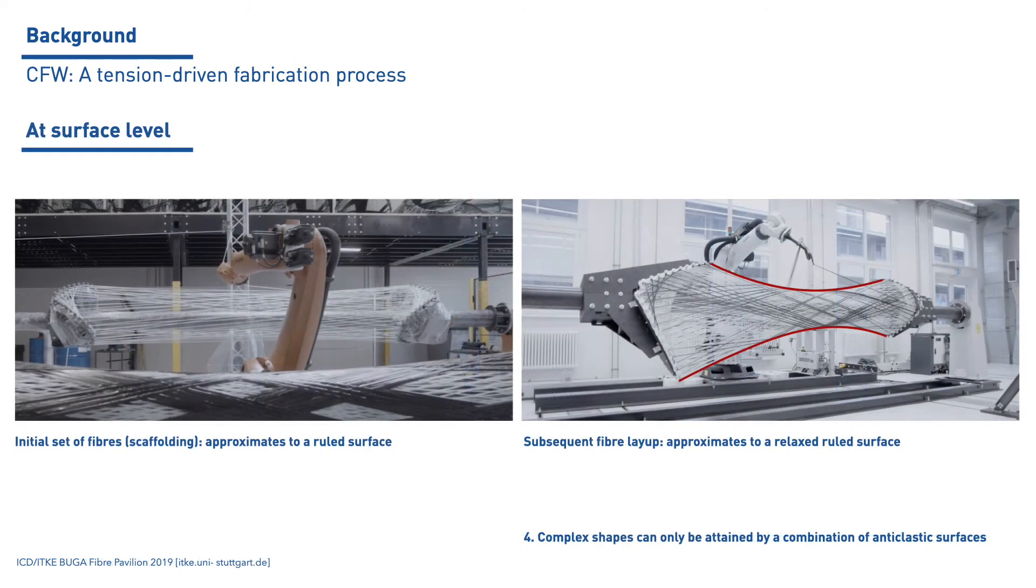At surface level, the shaping of the surface relies on the systematic sequence of fiber placing and on the pretension accepted by the robotic setup. This sequence must ensure the fiber-to-fiber crossing and pressing that results in a performative composite. As a result of this process, the initial set of spanning fibers that typically describe a ruled surface is progressively shaped into an anticlastic surface. Consequently, with Coley's filament winding, only anticlastic surfaces can be achieved.